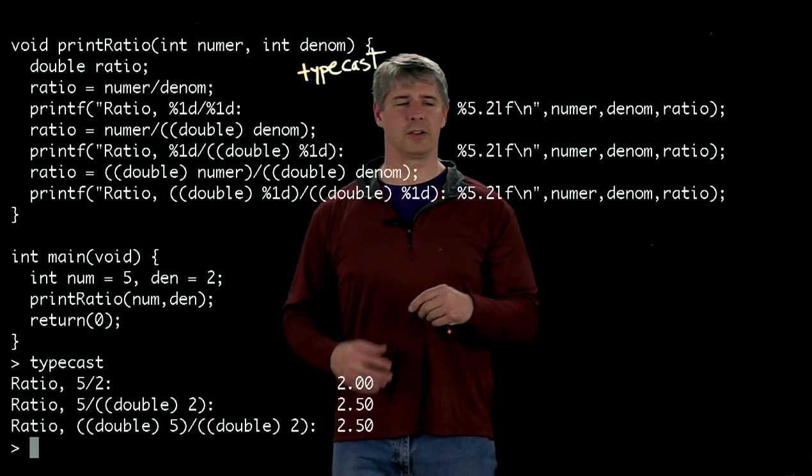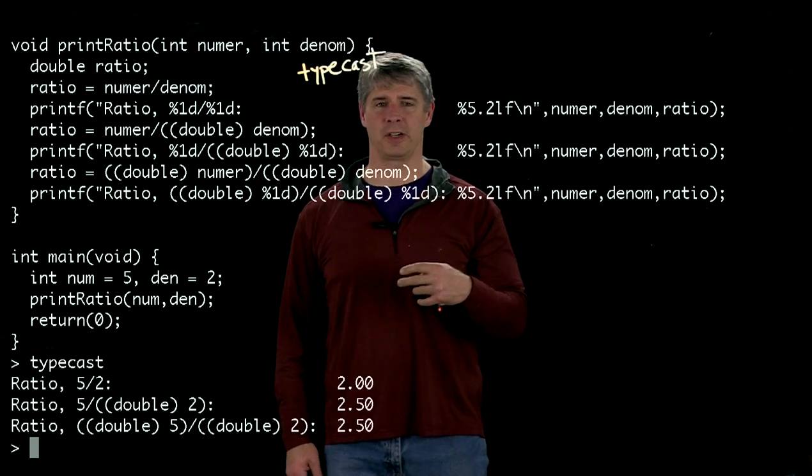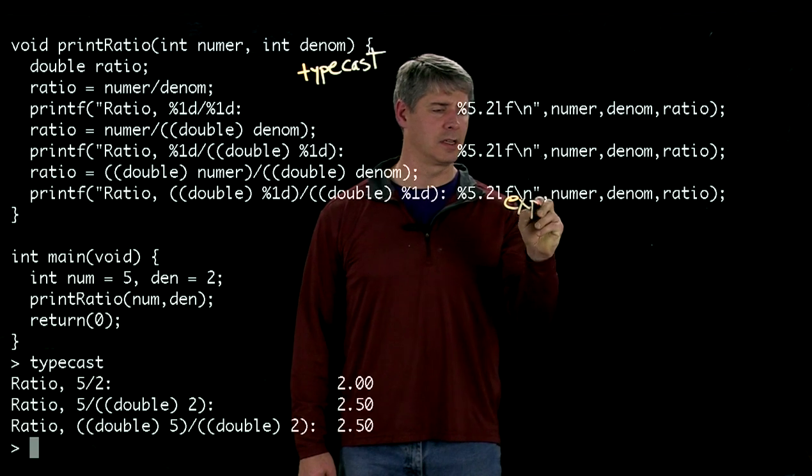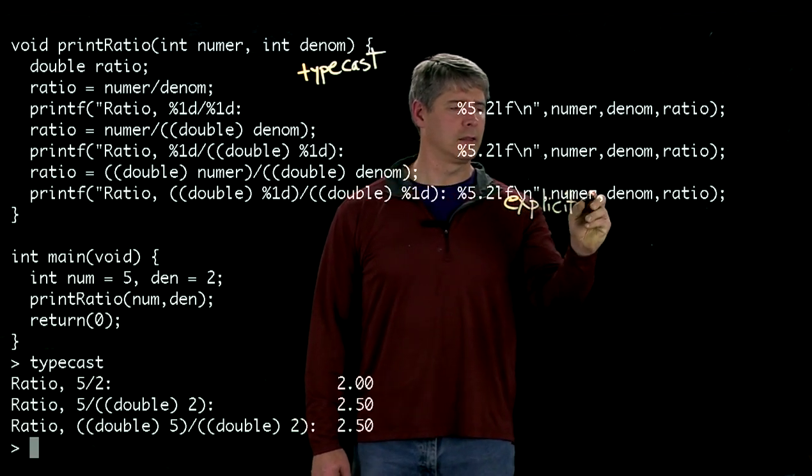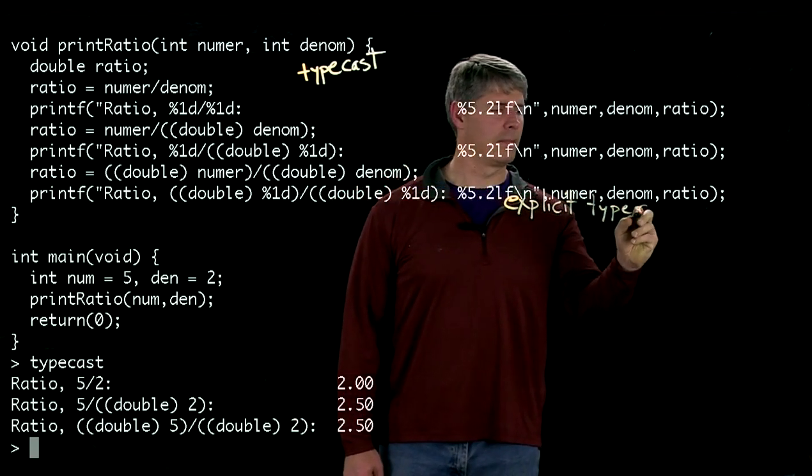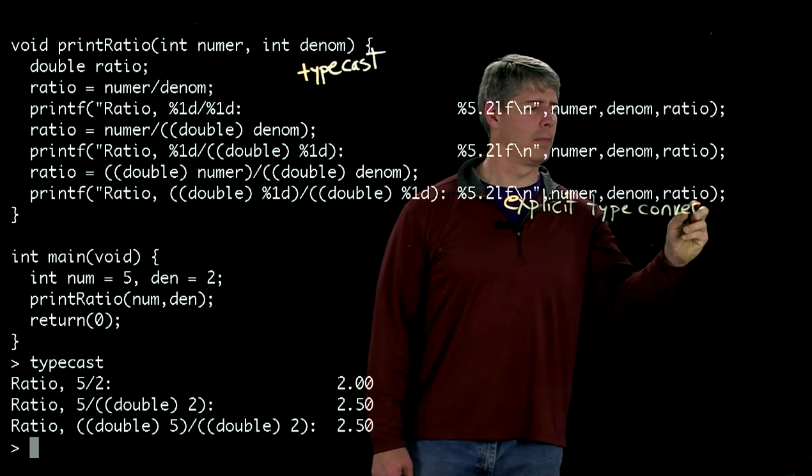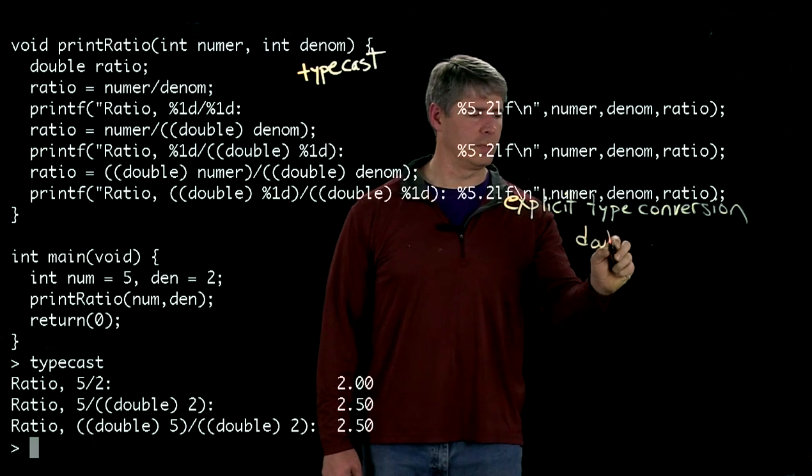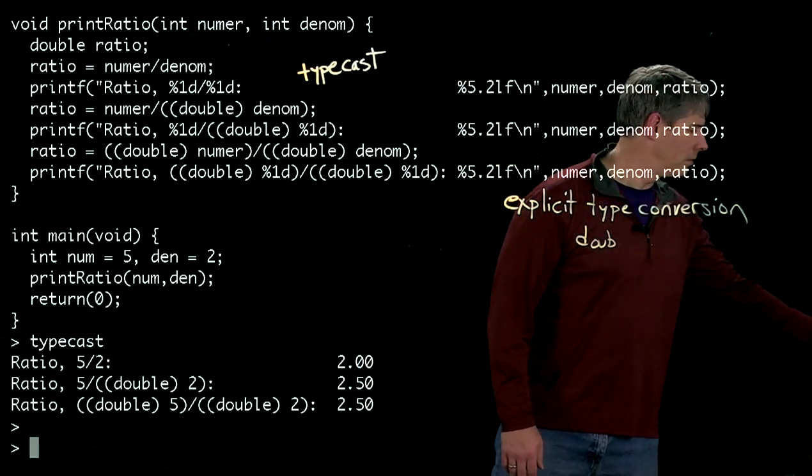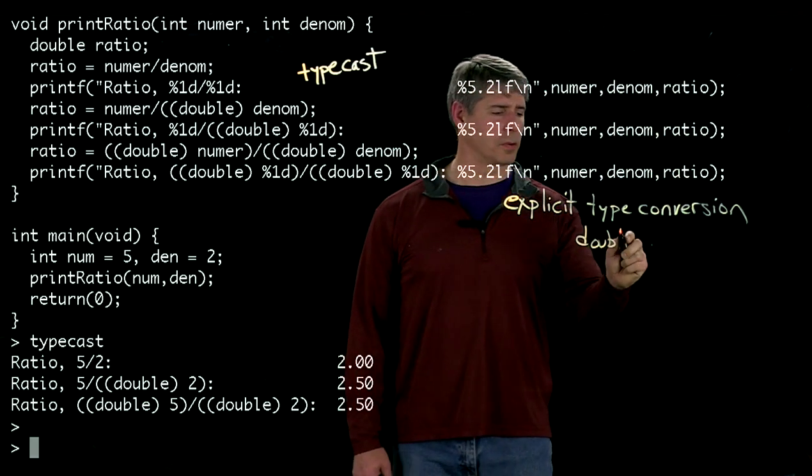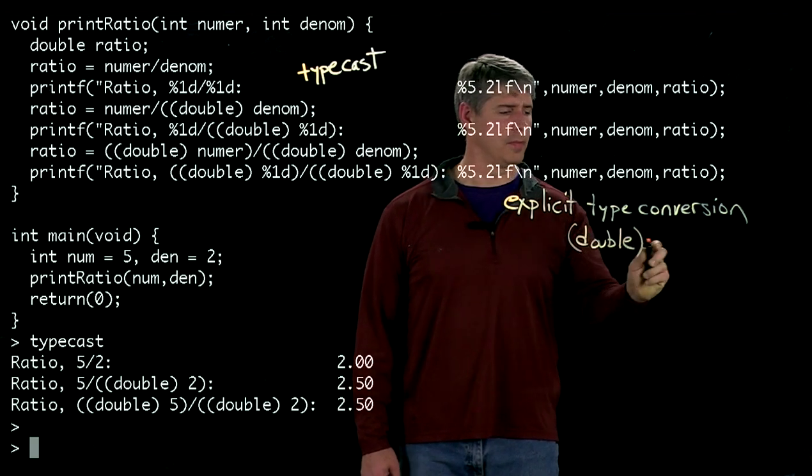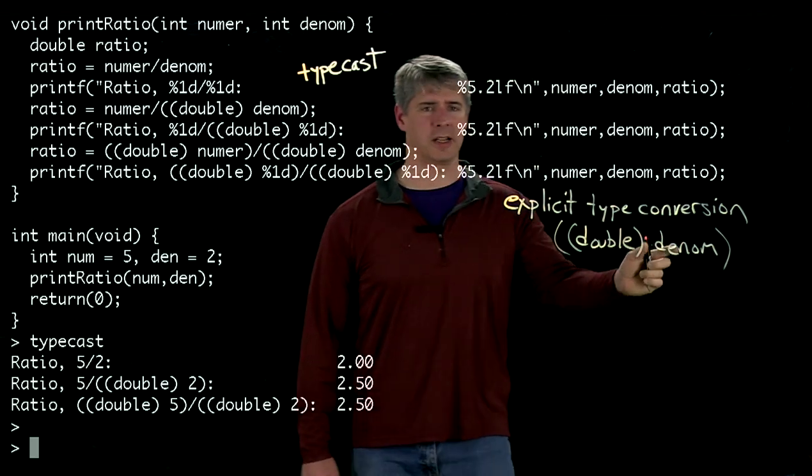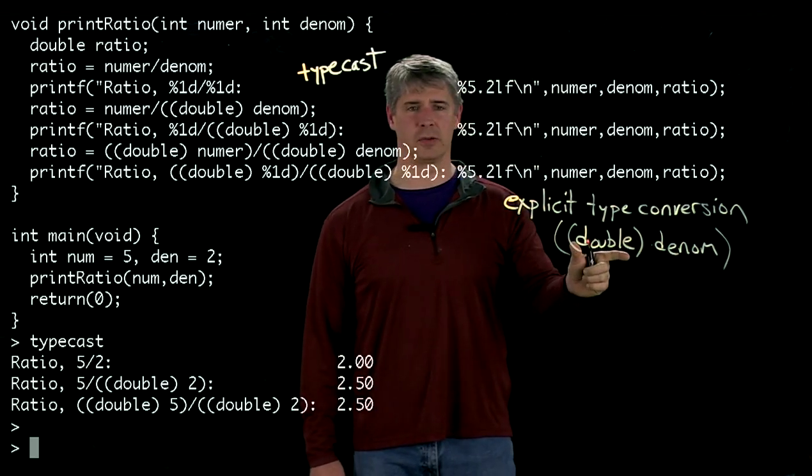So what's happening here? There's two kinds of type conversions that are going on. One is an explicit type conversion, and that's where we're doing double denom, for example. This expression takes that integer and changes it to a double.